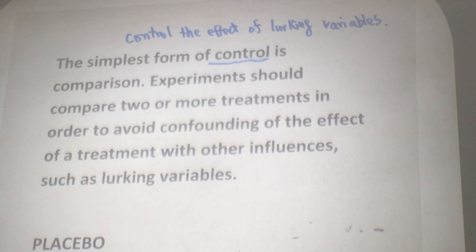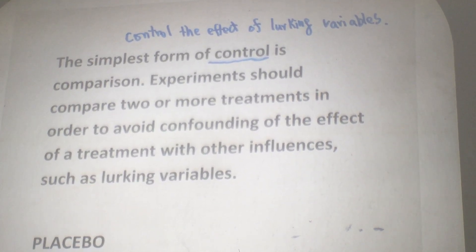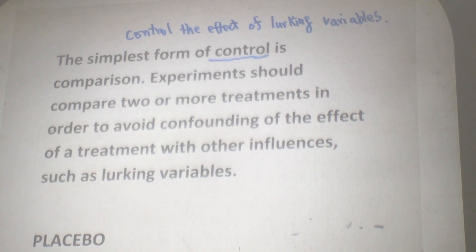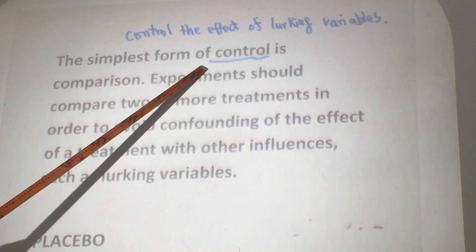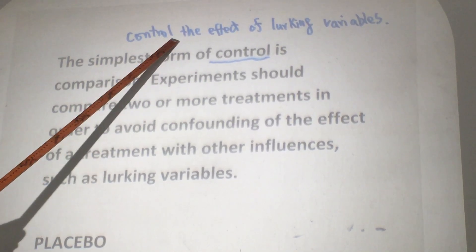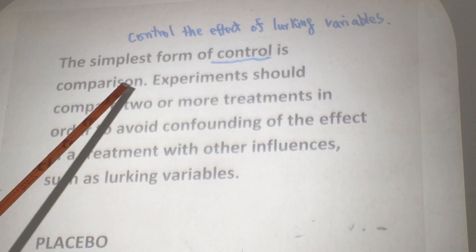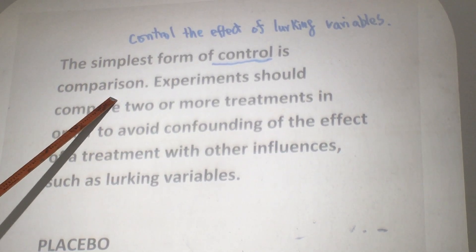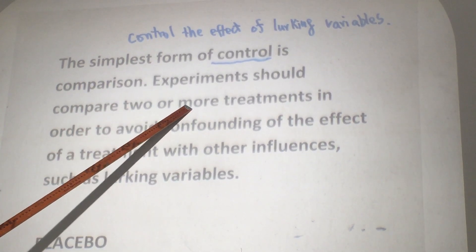To make a comparison, you need to create more than one group. So that's why we say the simplest form of controlling the effect of a lurking variable is comparison. You need to have two or more groups.